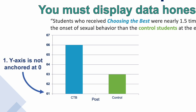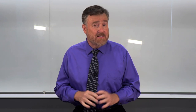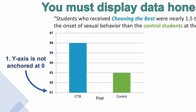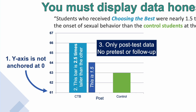The first flaw is that the y-axis is not anchored at zero. Always be suspicious of bar charts that do not anchor the y-axis at zero — generally, not anchoring there is an excellent way to exaggerate differences. In this example, the numbers run from 61 to 67 percent; what would that look like from 0 to 100 percent? The second issue is that although the advertising says students were 1.5 times more likely to delay, the blue bar is 2.5 times taller than the green bar — a distortion of the data. The third point is that only post-test data are included; there's no pre-test and no follow-up.